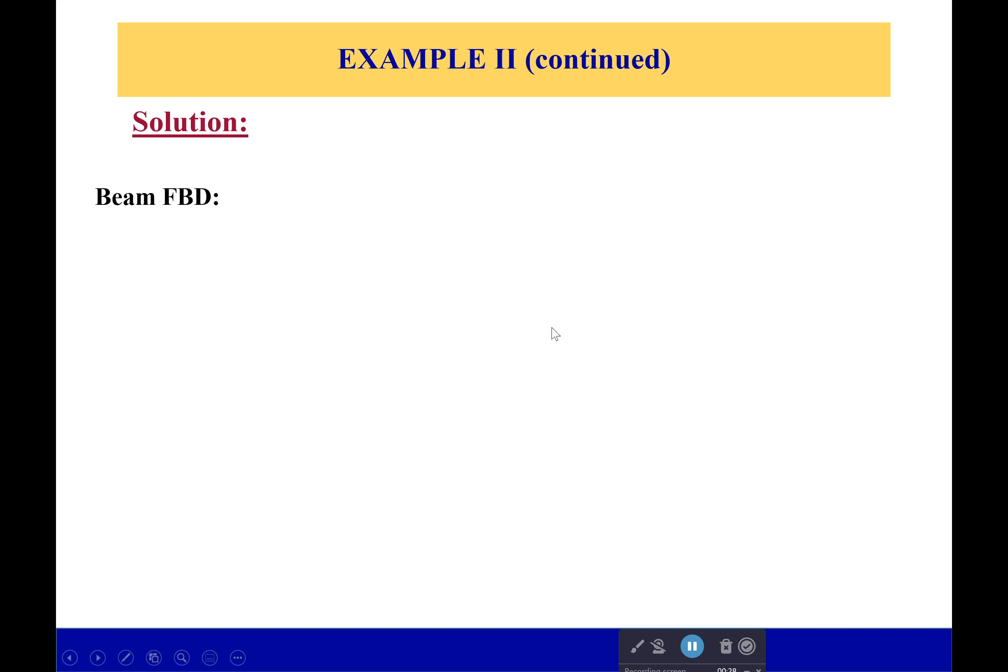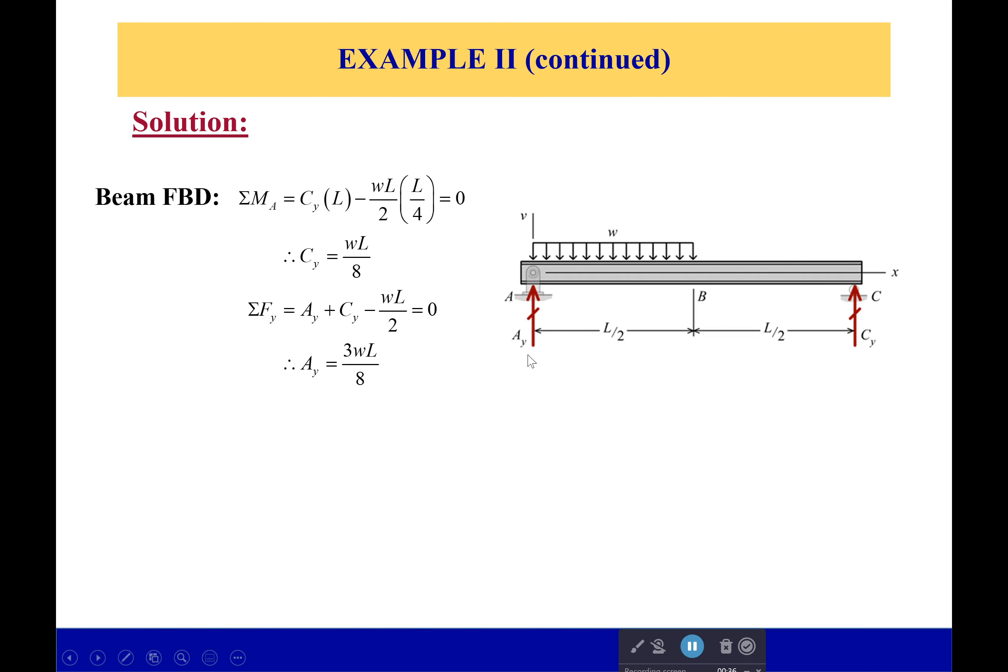First off, we have to do our free body diagram and solve for our reaction forces. I'm not going to spend much time on this—it's just the same steps we always take, which is sum of moments around a particular point and sum of the forces in the y direction. We solve and we get our equations right here. Do they make sense? Well, we've got more force over here next to A, which has the distributed load right next to it, which in my opinion makes a lot of sense.